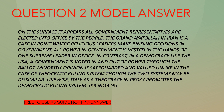Here is the model answer — it's not a perfect answer, just a model. 'On the surface it appears all government representatives are elected into office by the people. The grand ayatollah in Iran is a case in point, where religious leaders make binding decisions in government. All power is vested in the hands of one supreme leader. In contrast, in a democracy like the USA, a government is voted in and out of power through the ballot. Minority opinion is safeguarded and valued, unlike in the theocratic ruling system. Though the two systems may be dissimilar, likewise Italy as a theocracy in proxy promotes the democratic ruling system.' I managed that in 99 words.